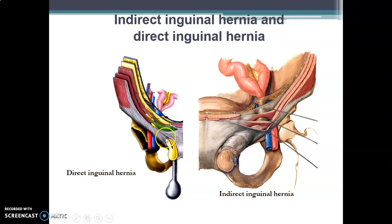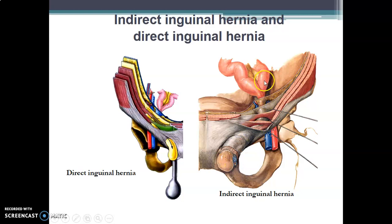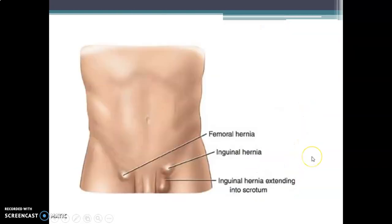The viscera pass through the superficial inguinal ring in direct inguinal hernia. For indirect inguinal hernia, herniation occurs through the deep ring of the inguinal canal, passing through the length of the inguinal canal and out through the superficial ring. This indirect hernia occurs lateral to the inferior epigastric vessels and does not occur through Hesselbach's triangle. Femoral hernia occurs below the pubic tubercle, while inguinal hernias occur above it.